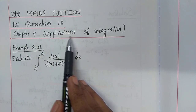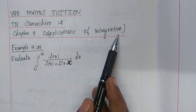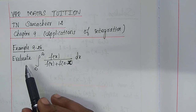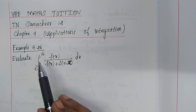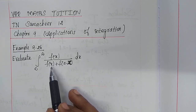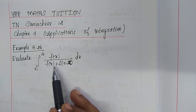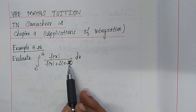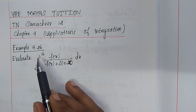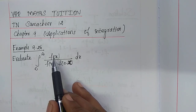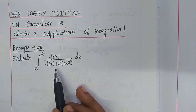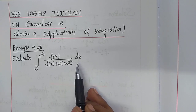Chapter 9: Applications of Integration. Example 9.26. Evaluate the integral from 0 to a of f(x) divided by f(x) plus f(a minus x), dx.